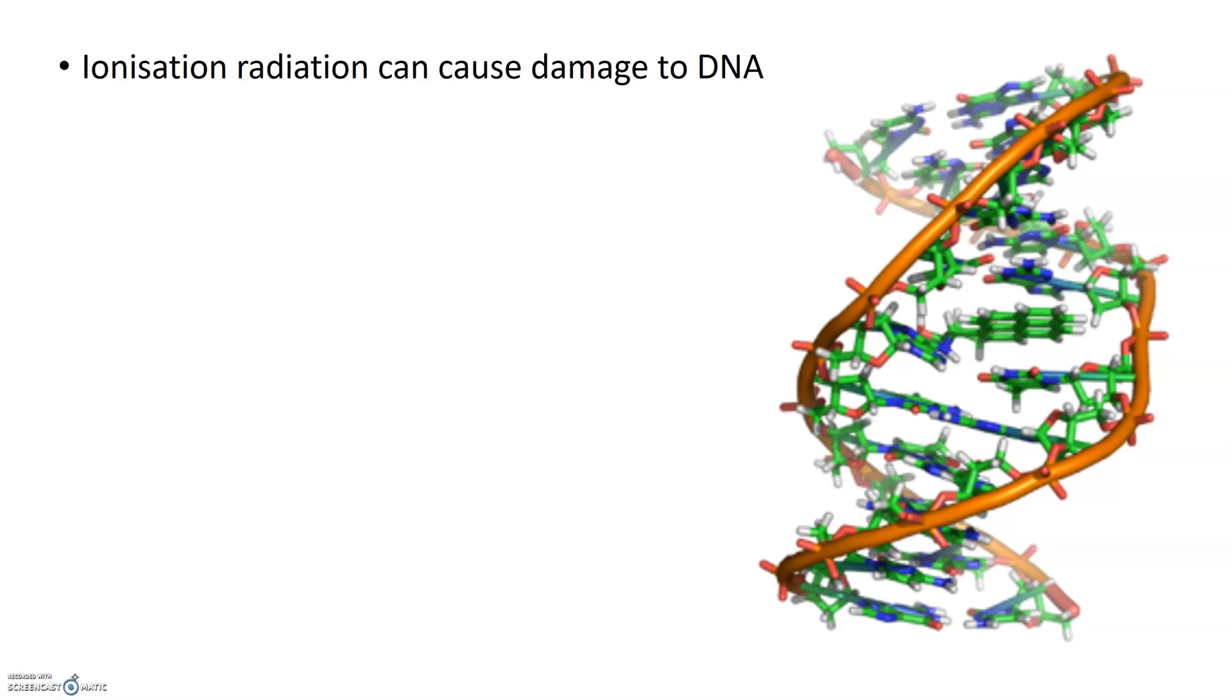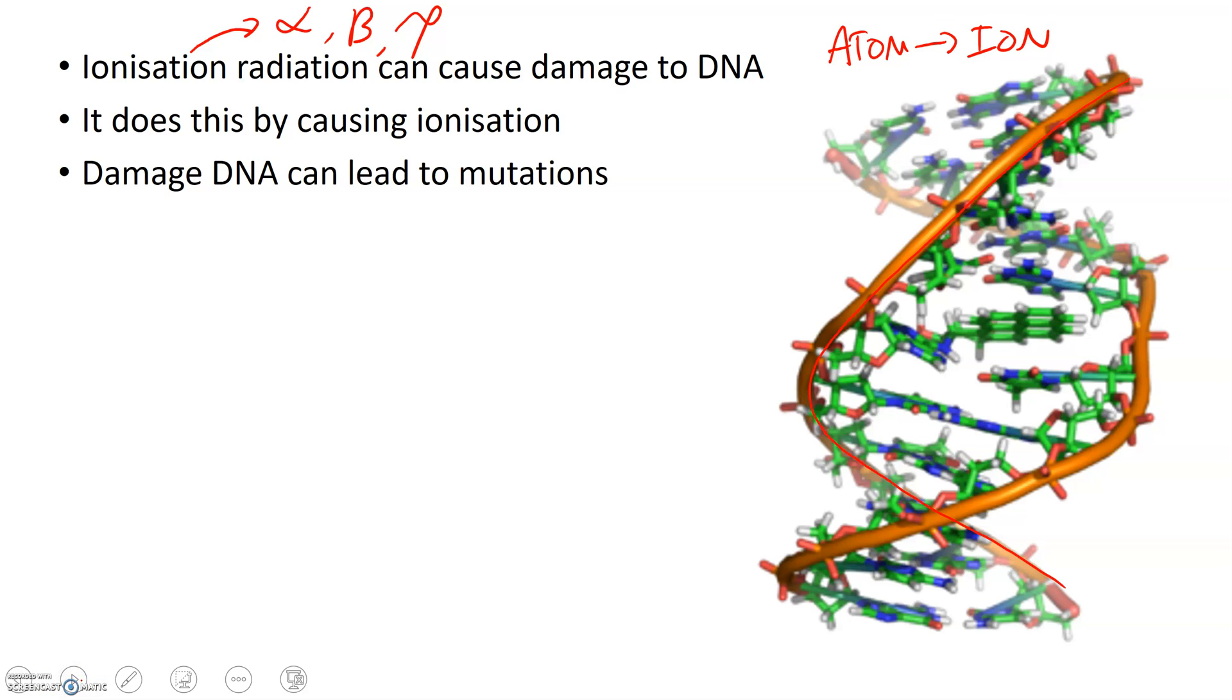Now the problem with ionizing radiation is this. The key idea is that it can damage the DNA which we can see here. Now DNA is in every cell and when ionizing radiation, remember ionizing means either alpha, beta or gamma or also x-rays are ionizing as well, it comes into your body. What it does is it causes ionization. What is ionization? Well that's when you go from an atom to an ion. This happens when something becomes charged. The way it does this is we take an atom, the nucleus and here are some electrons.